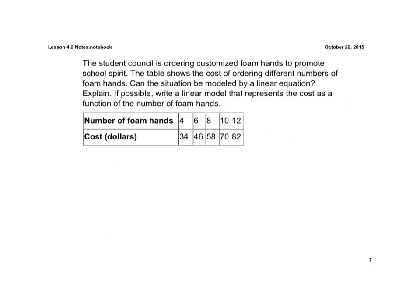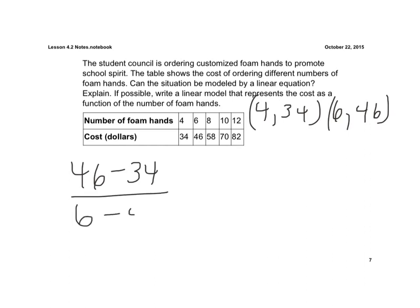So now we're going to take a look at this application problem. We read through this, and this is the table of values. We can find the slope of this table of values. So we're going to use the points 4, 34, and I'm going to use the point 6, 46. So the first thing we're going to do is find the slope. I subtract my y's, 46 minus 34. I'm going to subtract the x's in the same order. I get 12 divided by 2 is 6.